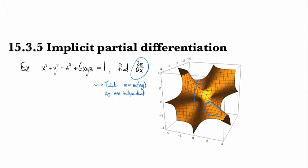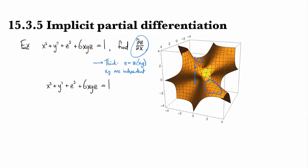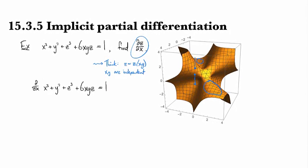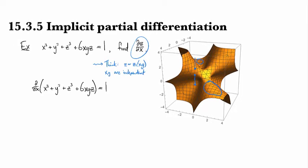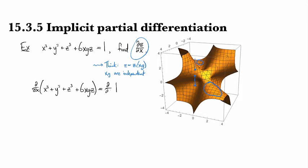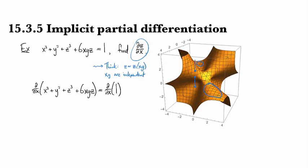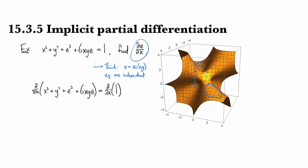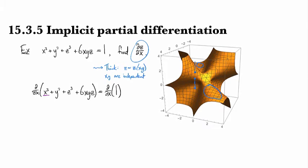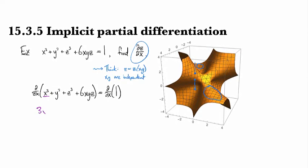So what we're going to do is we're just going to take that equation and differentiate both sides with respect to x. And so using linearity on the left, we have that it's the partial of x³ with respect to x, which is going to be 3x².